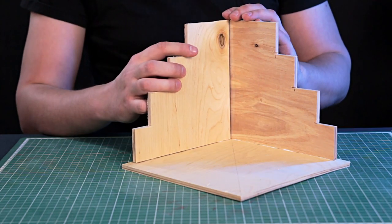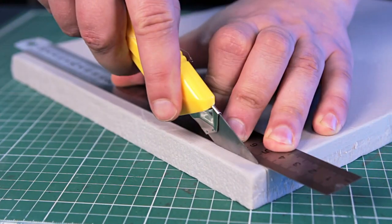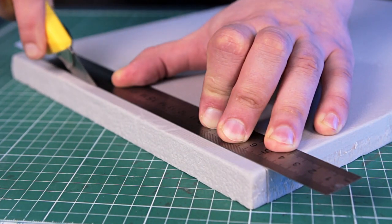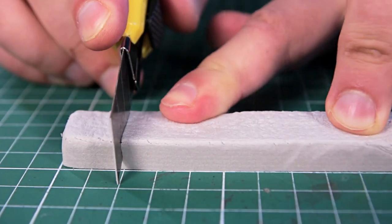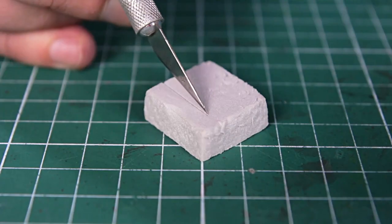While the glue is drying I have time to make stone bricks. I will be using XPS foam, which I bought at a construction store. First I will make squares of 20 by 20 mm and cut all the bottom of them.